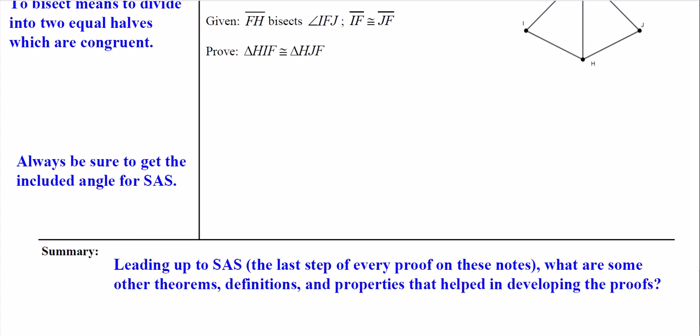For your summary, so obviously leading up to SAS at the end of each proof, what are some other theorems, definitions, and properties that we've used to help develop these proofs?